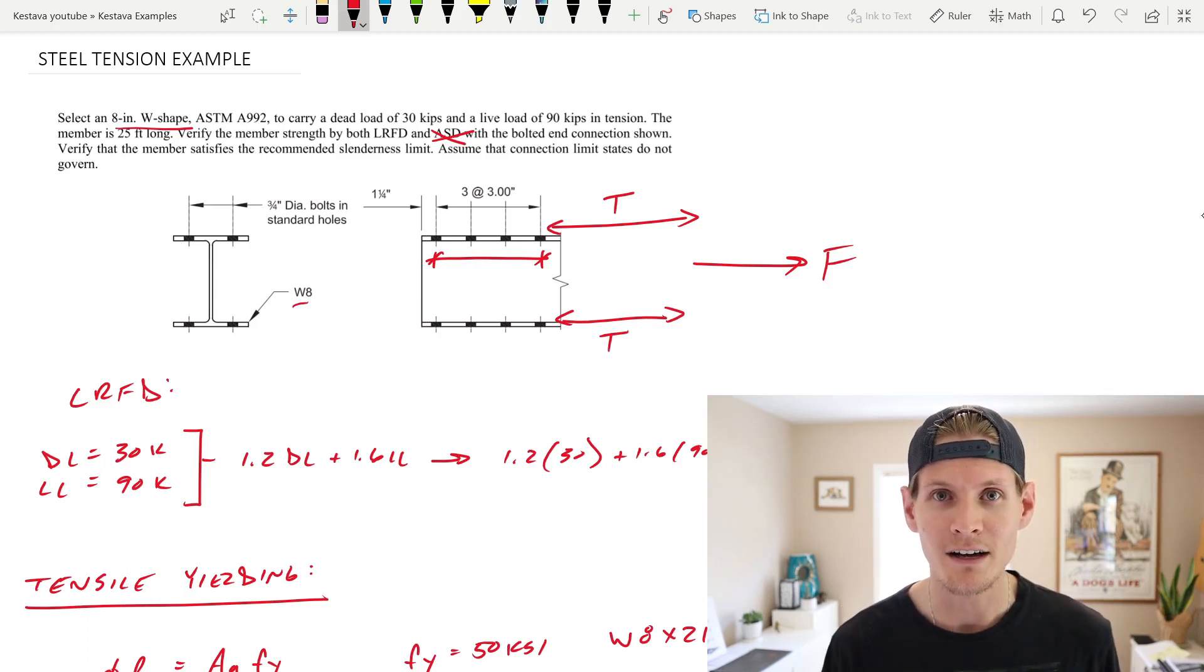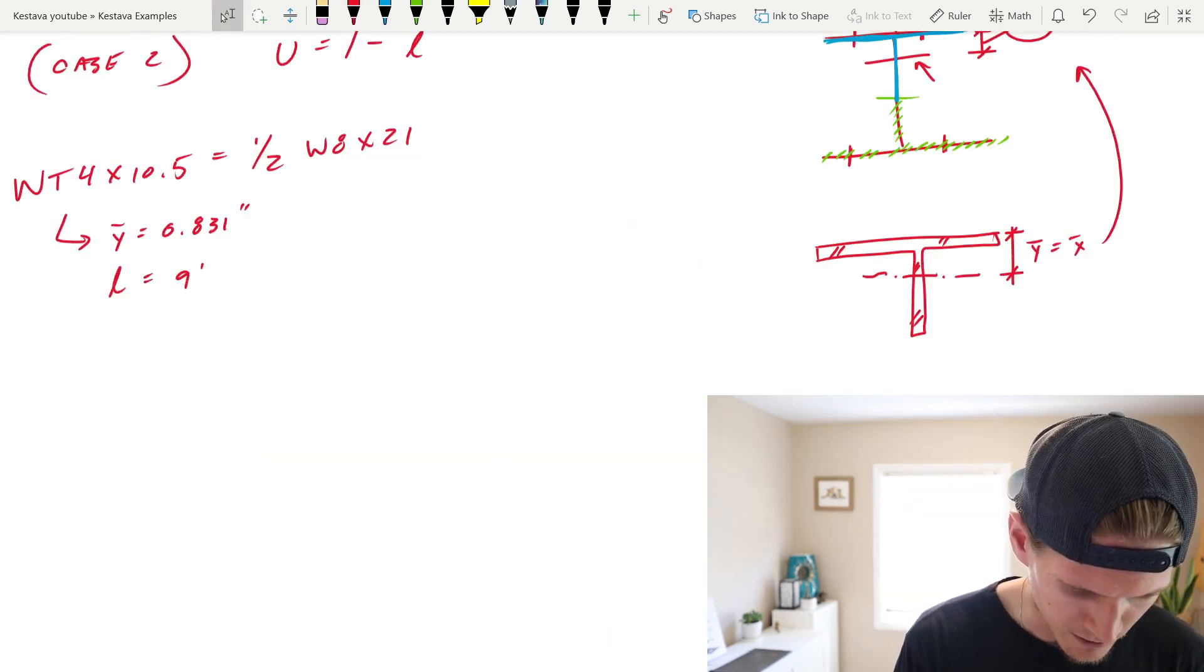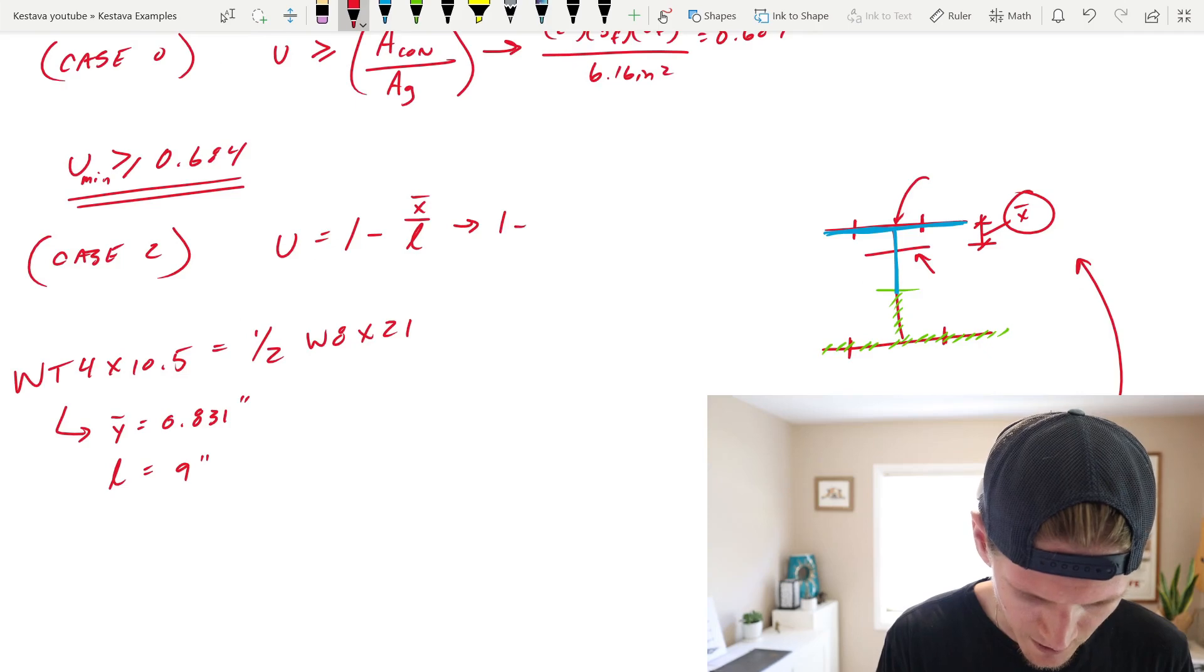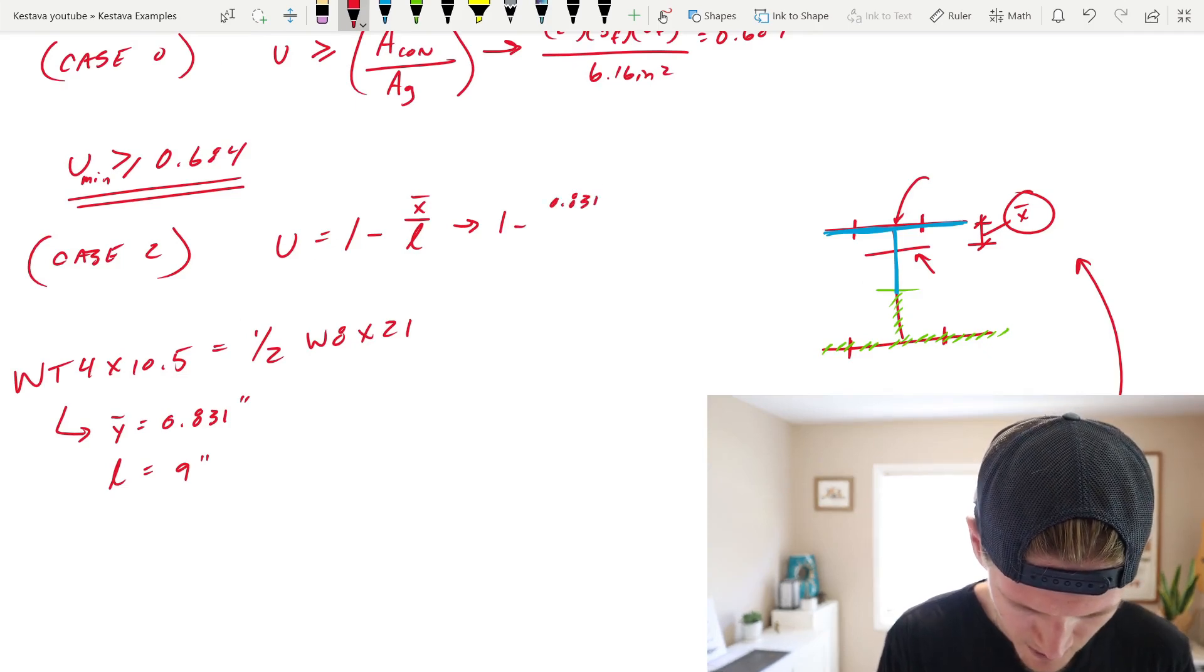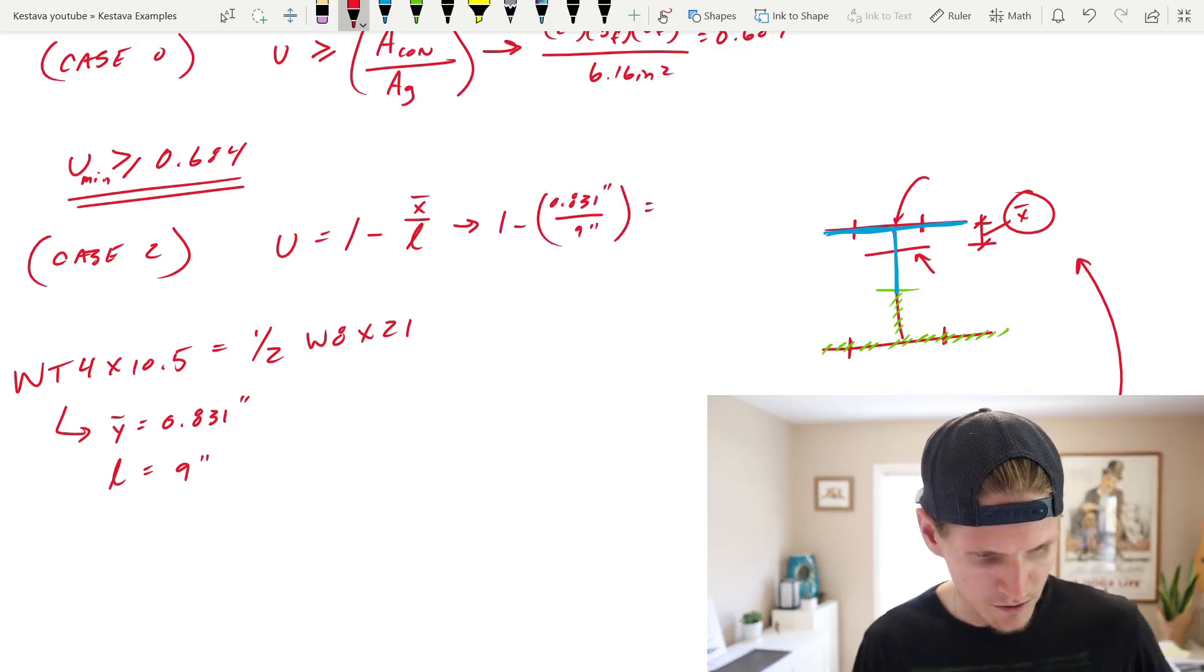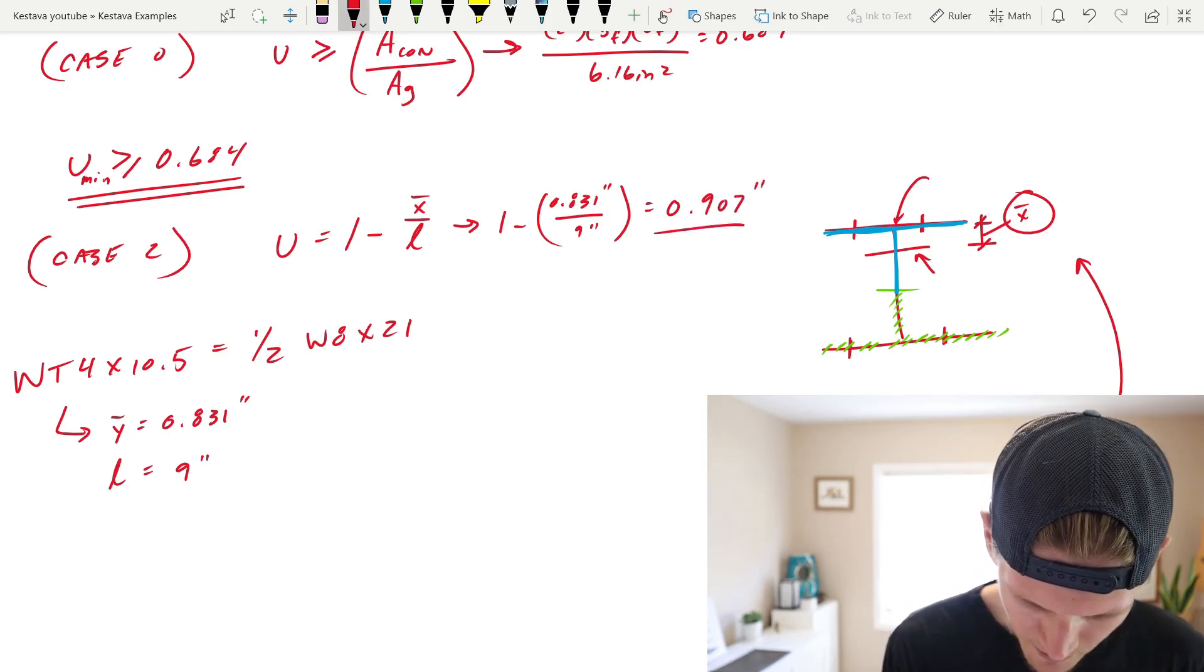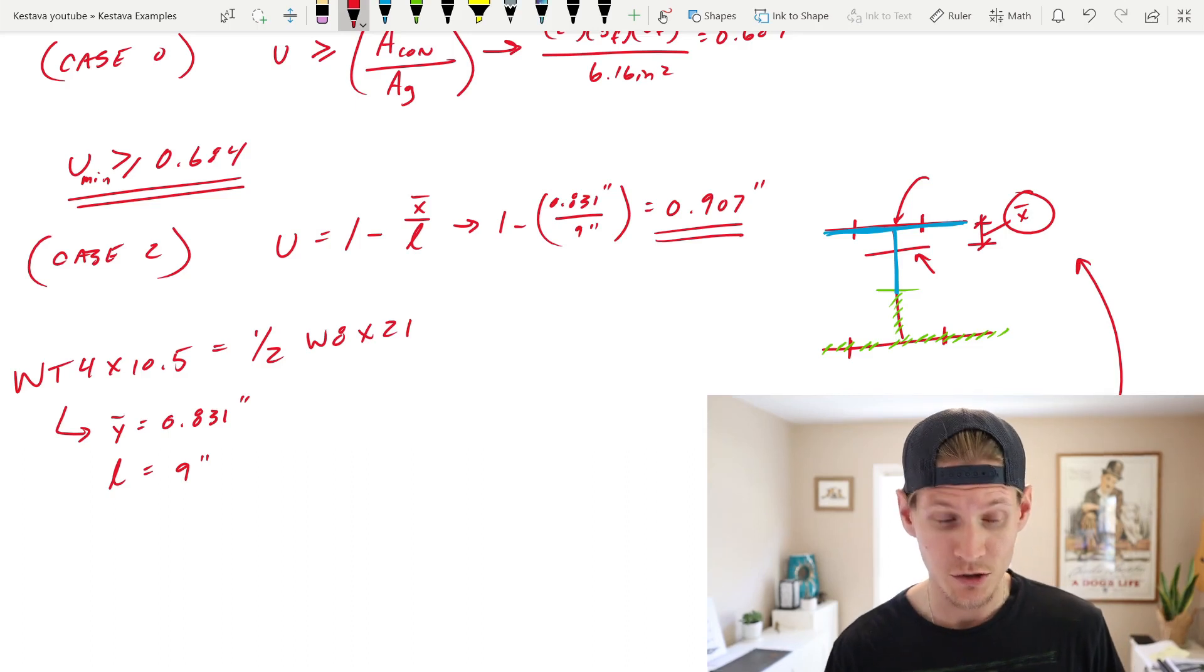Alright, so 9 inches is defining our L. So, L is equal to 9 inches. Let's just plug in here. So, this comes out to 1 minus 0.831 over 9 inches. This equals 0.907 inches. Alright, that's our second U. And that's for case 2.